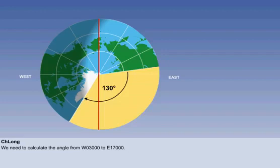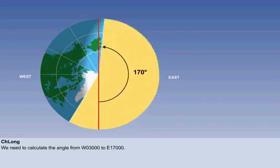Now let's consider another example, to 170 east, east 1700, from the 30 west meridian. It is now apparent that there are two angles between the two meridians, one of 200 degrees and one of 160 degrees.